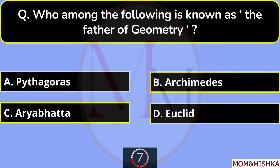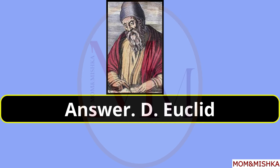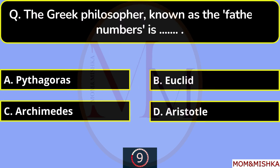Who among the following is known as the father of Mathematics? Archimedes, option B. Who among the following is known as the father of Geometry? Euclid, option D.